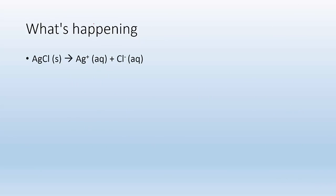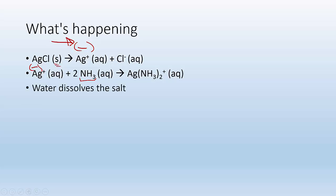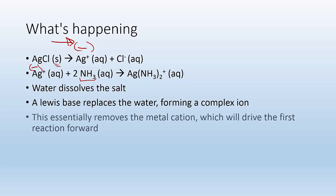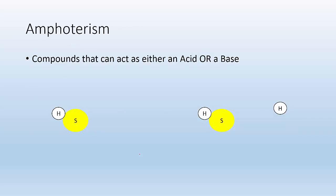Alright. So what's happening? So I got AgCl solid being dissolved to give me the ions. Now, some of these ions are being attacked by a Lewis base, NH3, to form a complex ion. So what's happening is it's using up some of that ion, which means, hey, I'm using up some of this ion, which means I can shift this reaction to the right to replace it, which means I can dissolve more of the solid. Alright. Water dissolves the salt. The Lewis base replaces water, forming a complex ion. This essentially removes the metal cation, which will drive the first reaction forward.